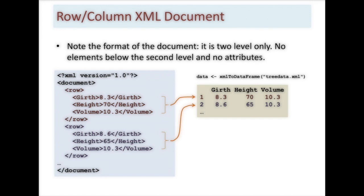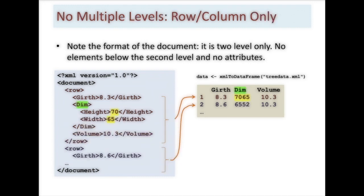Now if it does have that structure and you use XML to data frame from the XML package and pass it the XML file, it's going to manufacture a data frame for you with the names of the columns the same as the names of the tags. So girth, height, and volume would become three columns and each one of the child nodes underneath the root would become a row or observation in that data frame. But to be very clear, this only works if you've got the two-dimensional shallow structure. If you don't have that structure, this is not going to work.